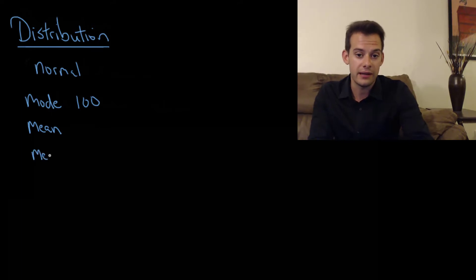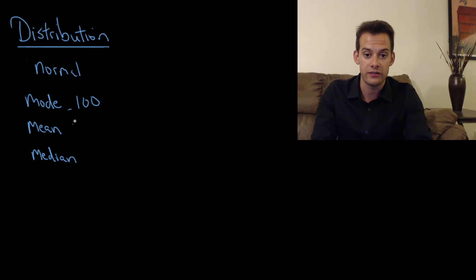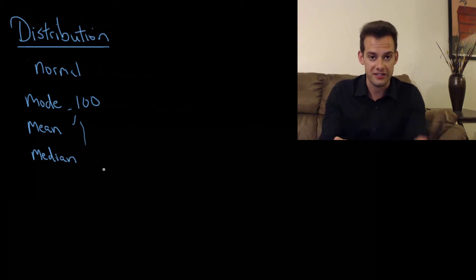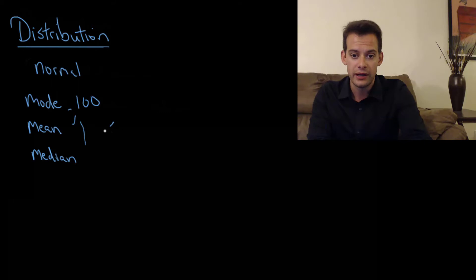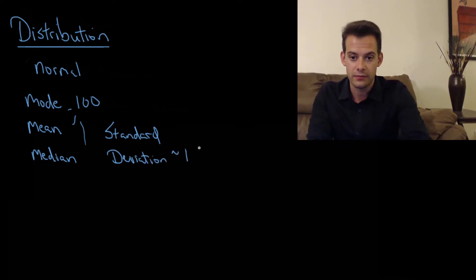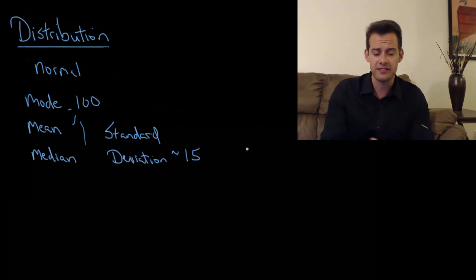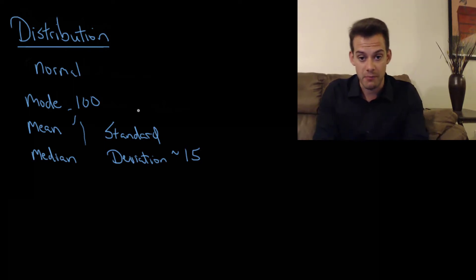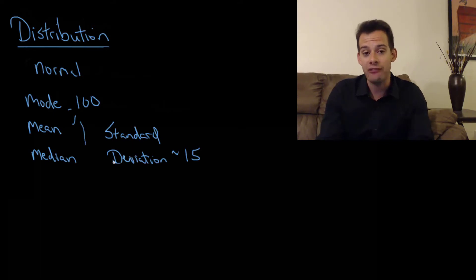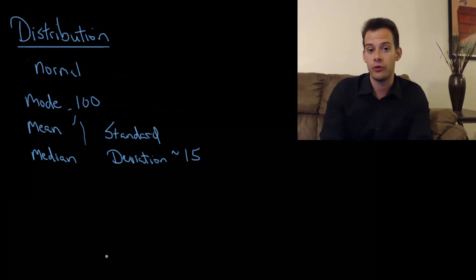The median is also 100 — if you line up all scores in order and pick the one that falls exactly in the middle, that's 100. So in a normal distribution all three measures are the same, and for IQ they're all 100. We can also calculate a standard deviation for IQ, which is about 15 points. Standard deviation tells us how different each score is from the average — some people score very close to 100, others much higher or lower — and averaging all those differences gives a standard deviation of about 15.